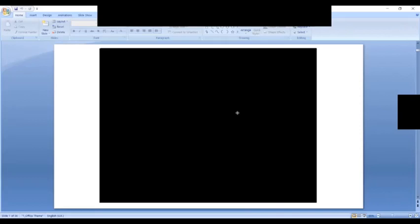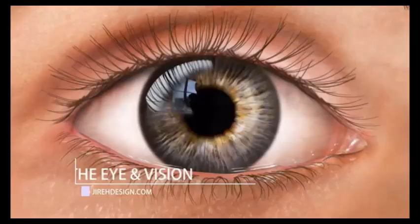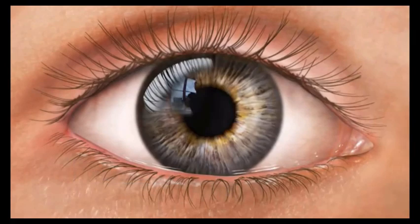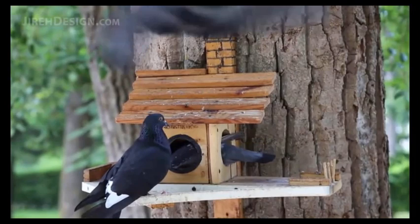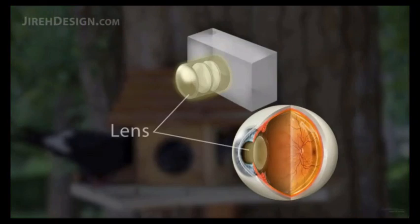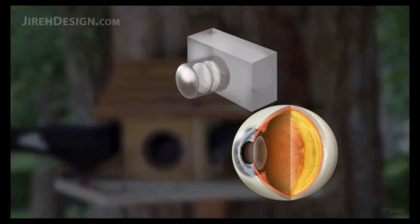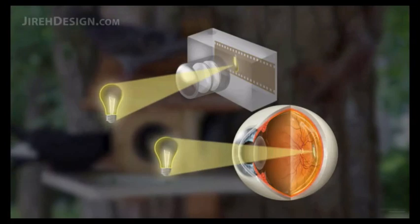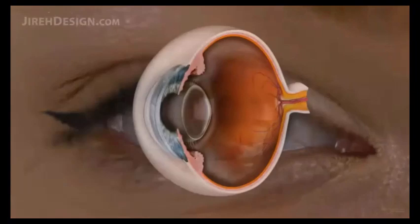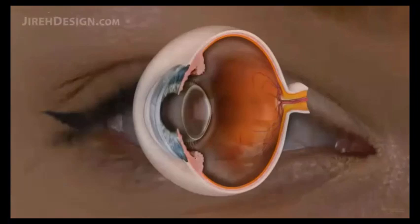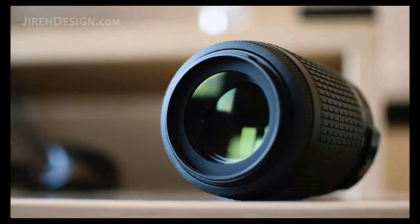Vision is one of the most important senses. The eye's main function is to detect light patterns and partner with the brain to translate light into images we see and perceive. The eye is a complex optical system very similar to a camera. Much like a camera lens, the lens in the eye focuses light onto the retina at the back of the eye. The retina functions as the film, capturing incoming light rays and sending them to the brain. Vision begins when light rays bounce off an object and enter the eye through the cornea — the clear, dome-shaped front window of the eye.